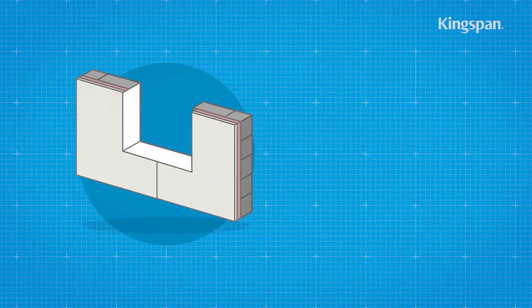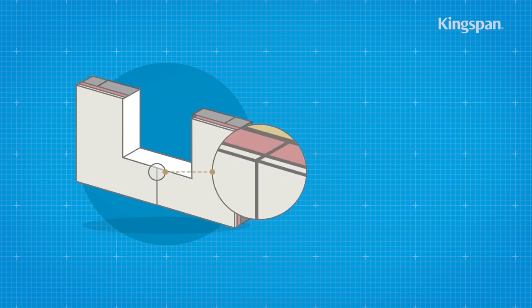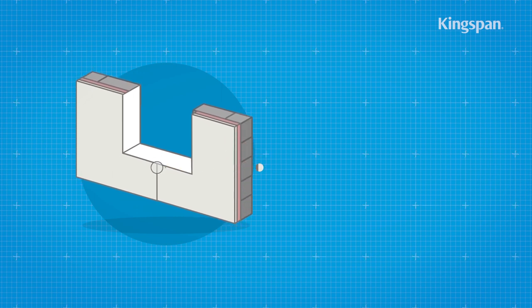Each sheet of insulated plasterboard should be lightly butted and once installed the perimeter should be sealed.